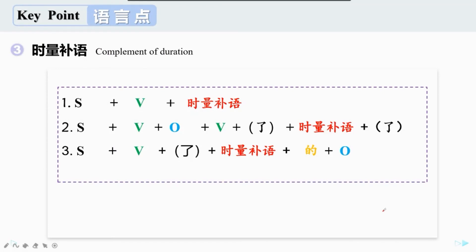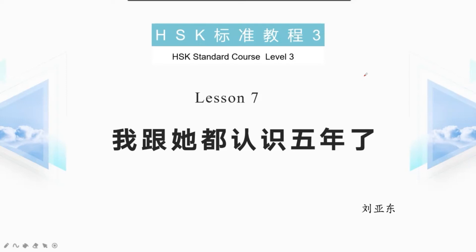今天我们学习了三种时量补语的用法。第一种，时量补语放在动词的后面：subject plus verb plus complement of duration。第二种，动词的后面有宾语，这时时量补语应该放在第二个动词的后面：subject plus verb plus object plus verb plus complement of duration。第三种，时量补语放在动词的后面、宾语的前面：subject plus verb plus complement of duration plus 的 plus object.